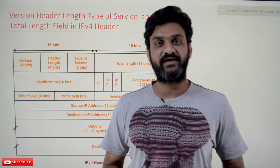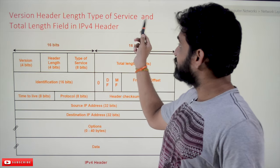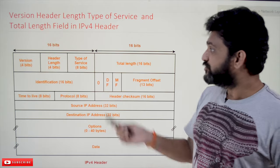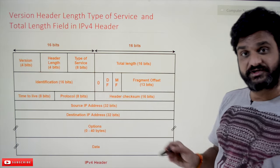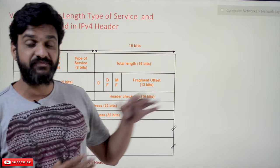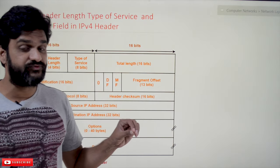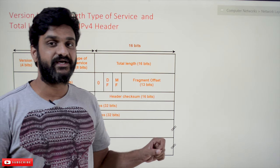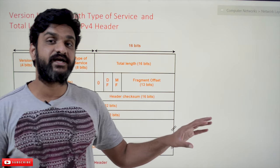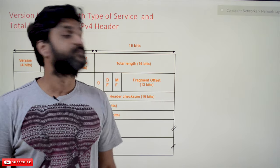Hi, welcome to Learning Monkey. I am Vikram. In this class we'll try to understand the Version, Header Length, Type of Service, and Total Length fields in the IPv4 header — the fields in the first row. The basic understanding of maximum and minimum size of the IPv4 header has already been explained in our previous videos, so please watch those first. Our suggestion is to follow the entire course playlist, the link for which is in the description below.